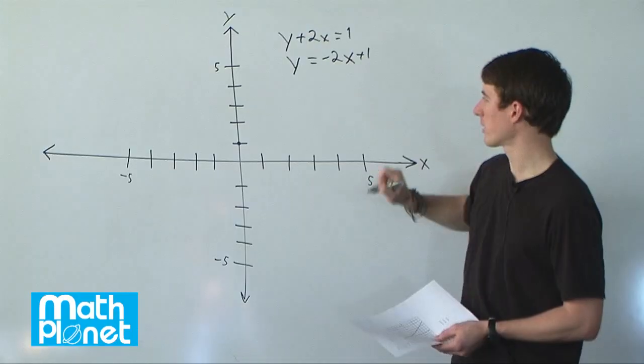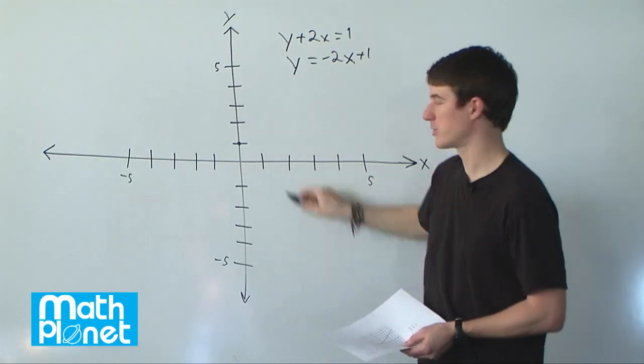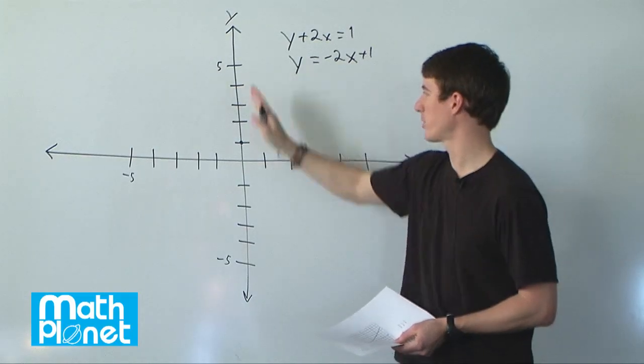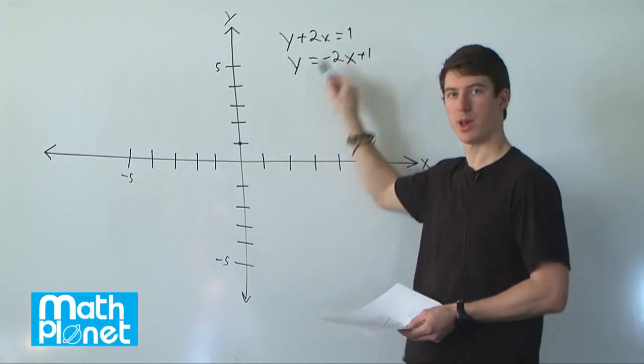It's a negative slope, so that means we're going down to the right. That's important to keep track of - if it's a negative slope we're going down to the right like this, if it's positive then it goes up in a normal way.